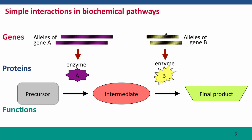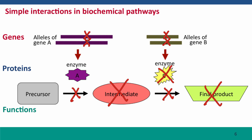Finally, what if there are loss-of-function mutations in both alleles of both genes? We're not going to make any enzyme A, so the first reaction won't happen, and the final product won't be produced for two independent reasons: first, because there's no intermediate, and second, because there's no enzyme B. So the consequence of a double knockout is phenotypically the same as mutating only gene A. We could say that having two mutant alleles of gene A masks or covers up the effect of mutations in gene B — from the phenotype, we can't tell how well gene B is functioning because gene A isn't functioning.